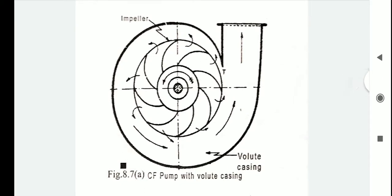First, we will discuss volute casing. As you can see from this diagram, this is a volute type of casing. It is a spiral type in which the area of flow gradually increases from the throat towards the delivery pipe.